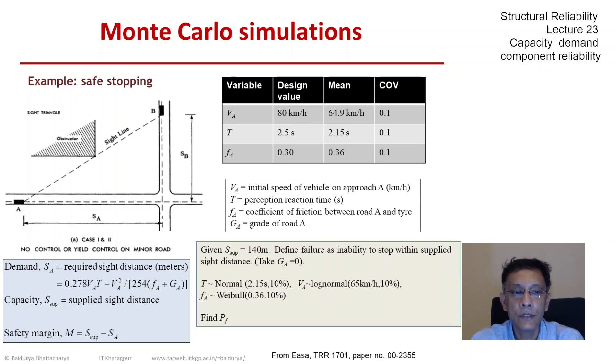The three random variables: T is normal, V_A is lognormal, and F_A is Weibull with the parameters defined in the table at the top. So let us solve this with Monte Carlo simulations.